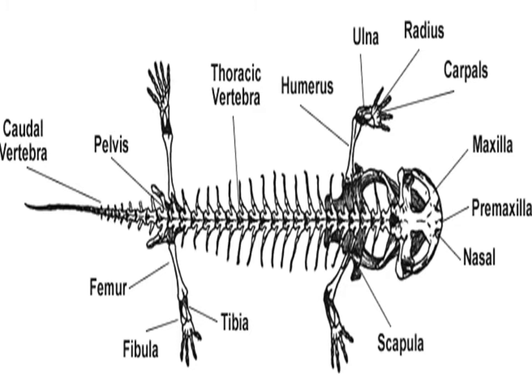Amphibians also have a neck. The first vertebra is a cervical vertebra which moves against the back of the skull, allowing the head to nod vertically. The last trunk vertebra is a sacral vertebra, which attaches the pelvic girdle to the vertebral column. There is also a sternum present in the anterior ventral trunk region that supports the forelimbs and protects internal organs. It is reduced or absent in anurans.